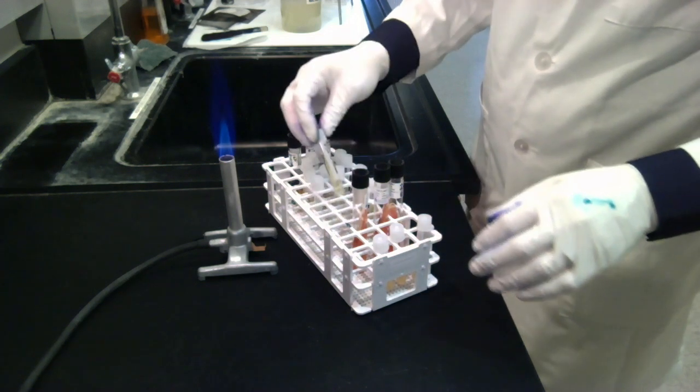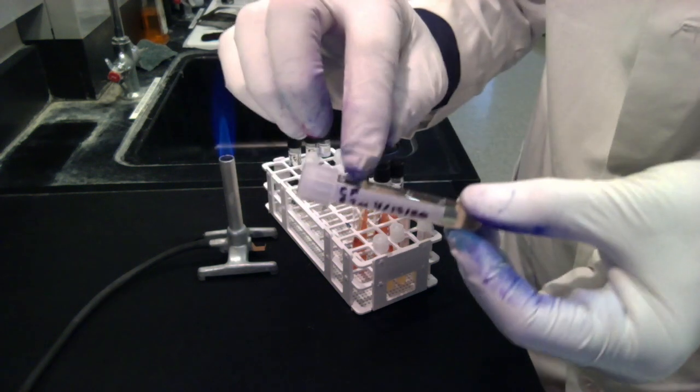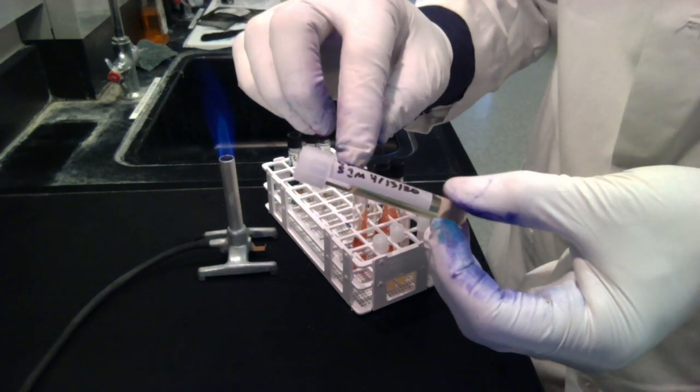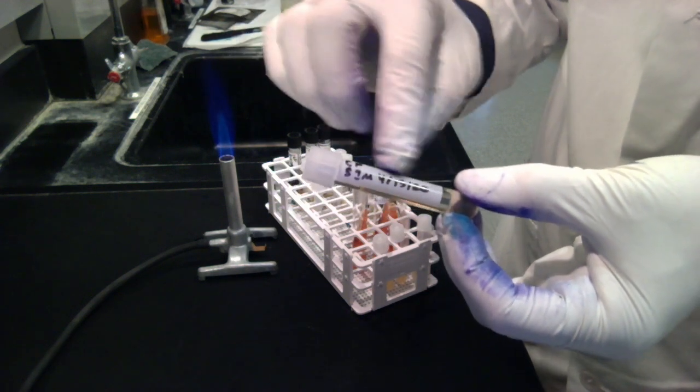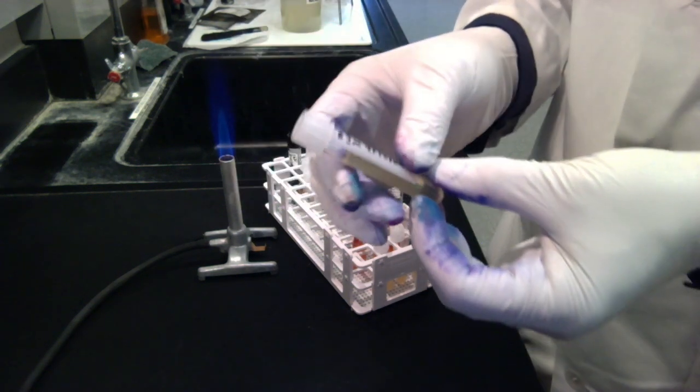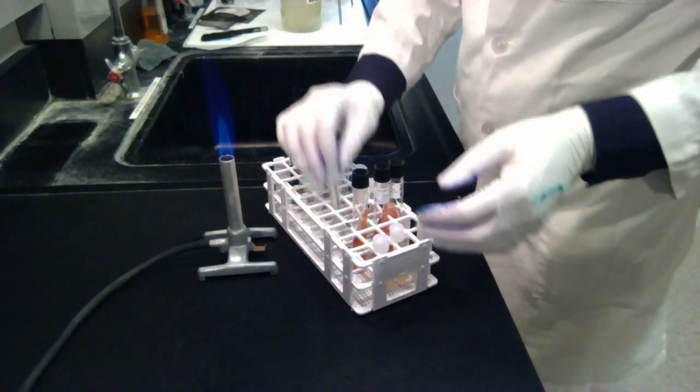The next thing you want to do is always label your tubes. So, on this tube here, I have CF for C for undii, I have SIM, that's the test, and then the date. You also want to write on here your initials, so that you know that it belongs to you.